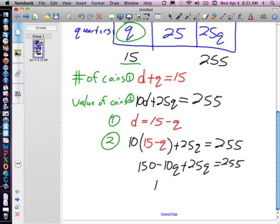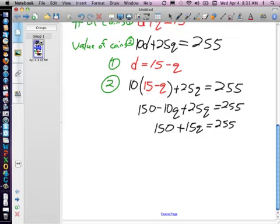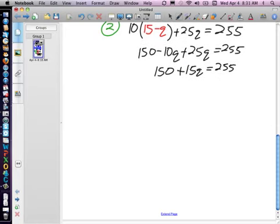So now we have 150 plus 15q equals 255. Let's move this up so I can stop leaning over here. So we have 15q equals 105. And q is going to have to equal, what is that? 7, I think. Let's see, 7 times 15, yep, 105. Now it's nice to have q there instead of x, because I know that q represents quarters.